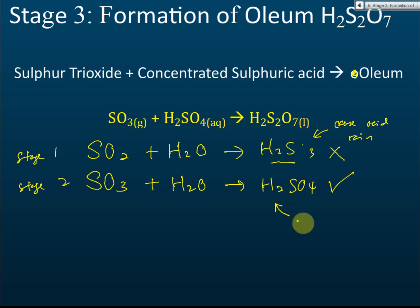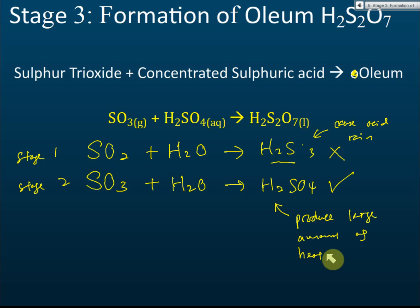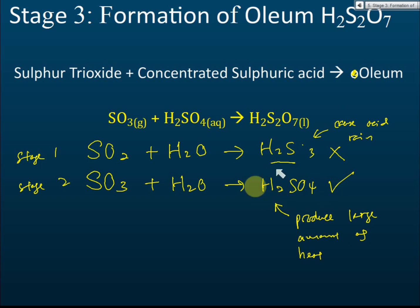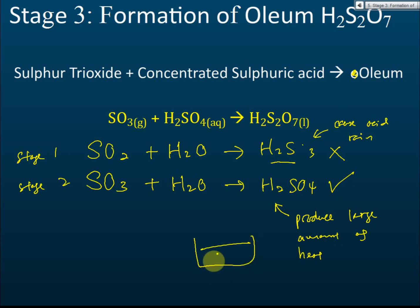This process produces a large amount of heat. If you are in Form 4, you should know this is an exothermic reaction — highly exothermic. This large amount of heat will increase the temperature of the sulfuric acid and can even cause it to boil.